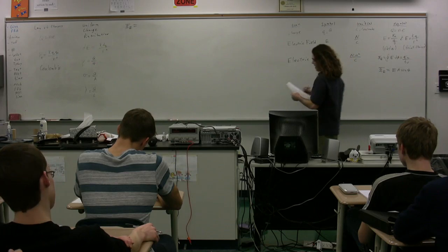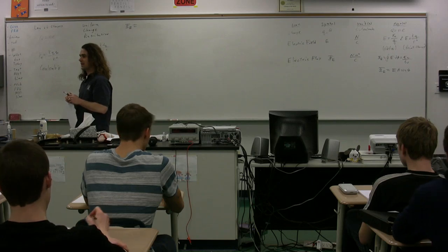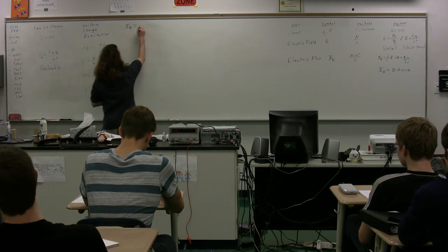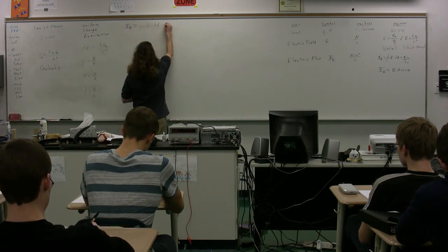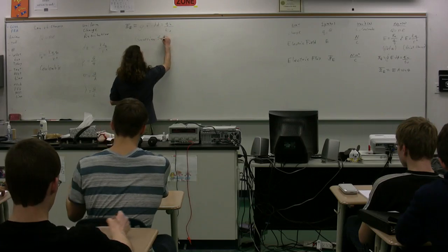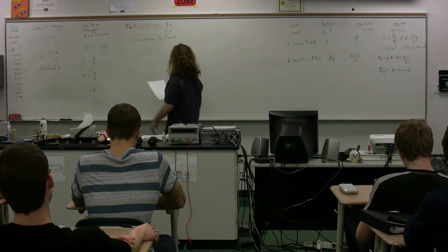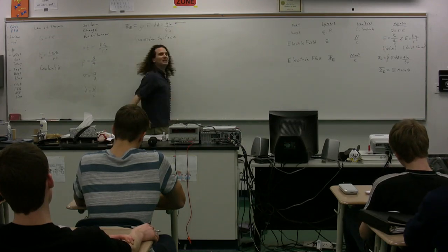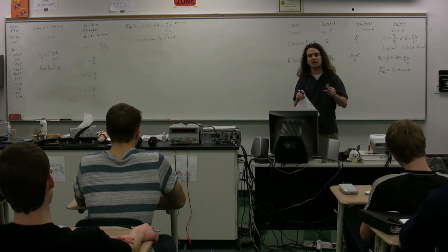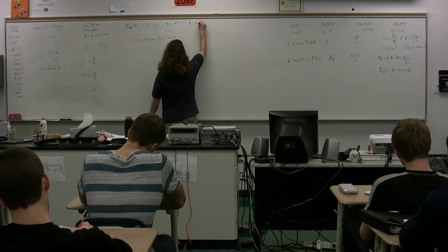So we have Gauss's law. Whenever we use Gauss's law, Mr. P, what should we do? We should draw a Gaussian surface. Whenever you use Gauss's law, you must draw out your Gaussian surface. Q_in is the charge inside the Gaussian surface.